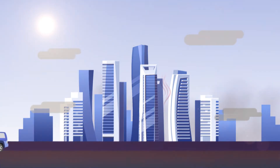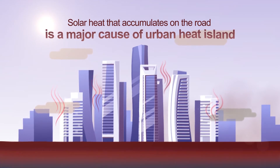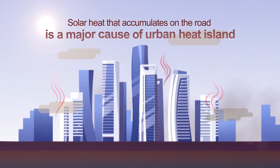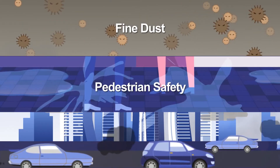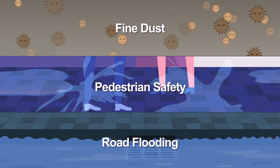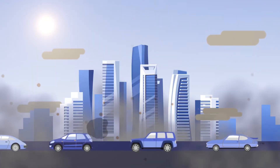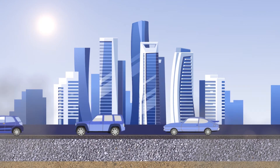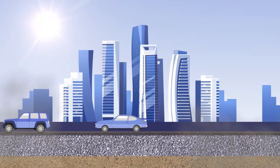Solar heat accumulated on the road is one of the major causes of Urban Heat Island. Issues of fine dust, pedestrian safety, and road flooding that occur on most sidewalks and roads in a city can be resolved by paving sidewalks and roads with an eco-friendly porous pavement, ElastoPave.